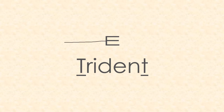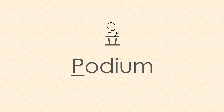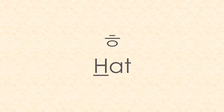Here we have the trident, because it's a T sound, and it looks like a sideways trident. And here we have the podium — P sound for podium. It looks like a podium where somebody's standing and giving a speech. P for podium — P sound. And here we have H for hat, because it looks like a person wearing a hat.